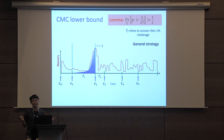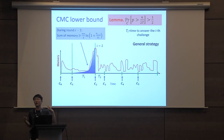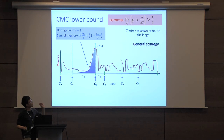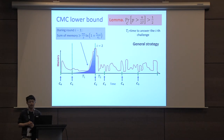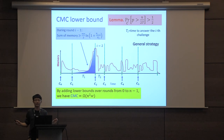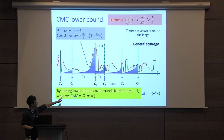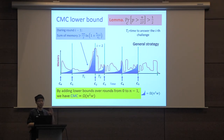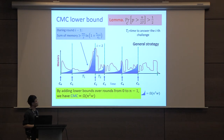Since memory at every time step can now be lower bounded as a function of n and time t, for each round i we can show the sum of memory consumption is lower bounded as nw/(2 * f(t_{i-1}, t_i)). Adding these lower bounds over all rounds from 0 to m-1, the CMC of the round game is lower bounded by an area which is omega(n^2 * w). This finishes our proof.